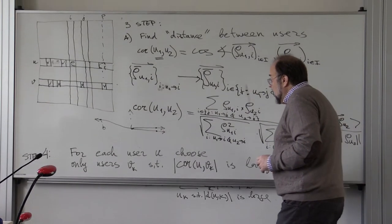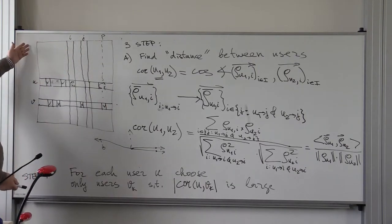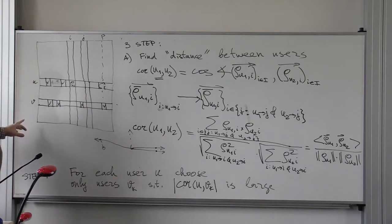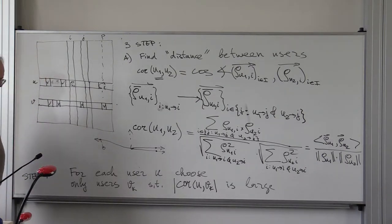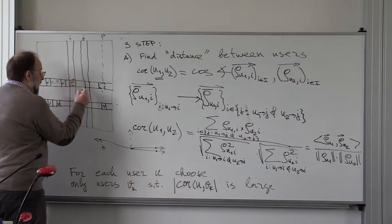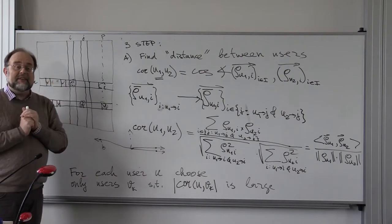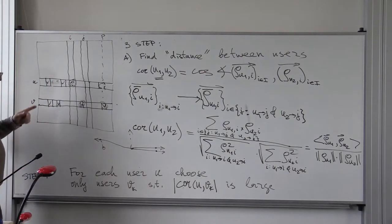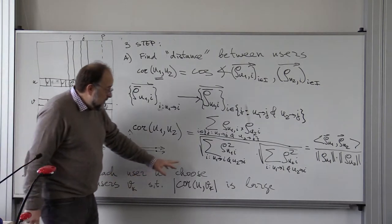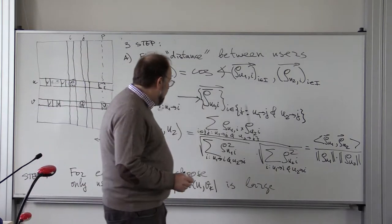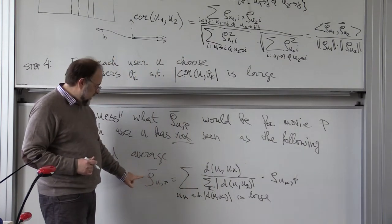How do you test a recommender system? It's very simple. Netflix had sample data containing several hundreds of thousands of users and several tens of thousands of movies, about 1% filled. They covered a few existing ratings and gave you that truncated table. Then the recommender system estimates what should sit in the hidden entries using algorithms like the weighted average.